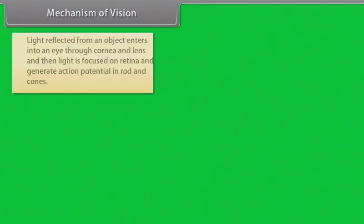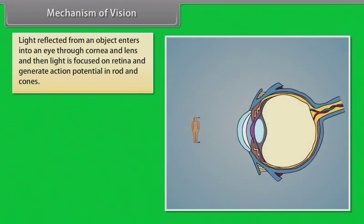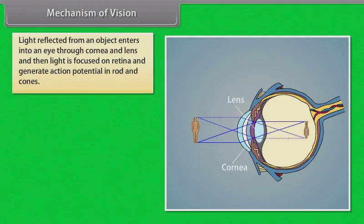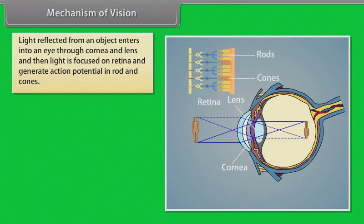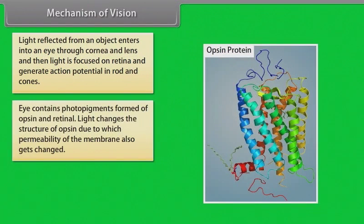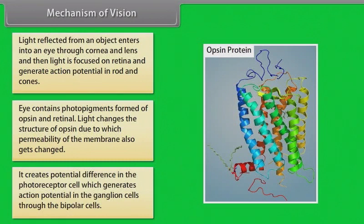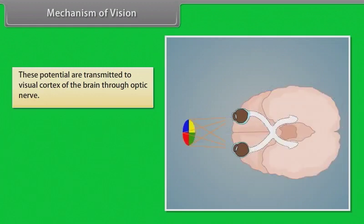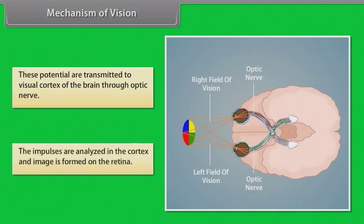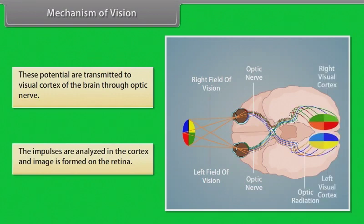Light reflected from an object enters the eye through the cornea and lens, and is focused on the retina, generating action potentials in rods and cones. The eye contains photopigments formed of opsin and retinal. Light changes the structure of opsin, altering membrane permeability and creating a potential difference in the photoreceptor cell. This generates action potentials in ganglion cells through bipolar cells, which are transmitted to the visual cortex via the optic nerve, where impulses are analyzed and the image is formed.